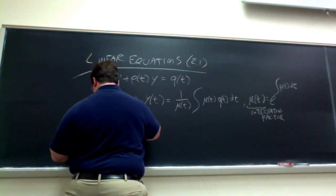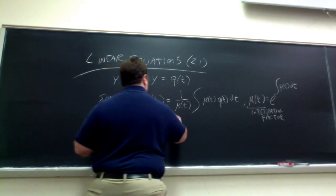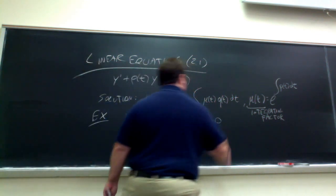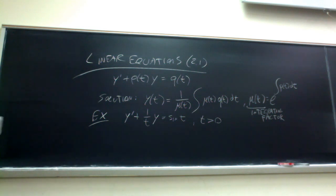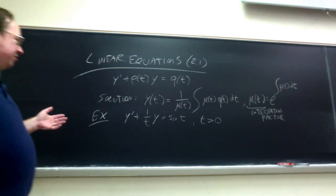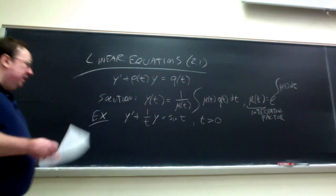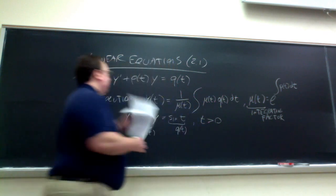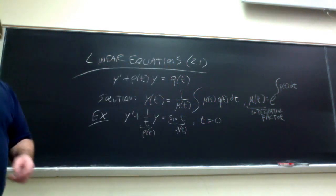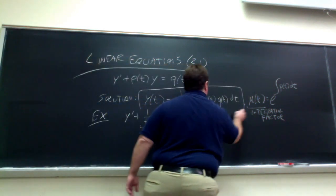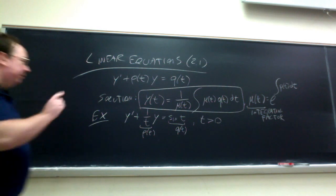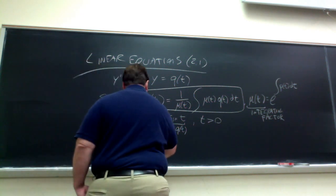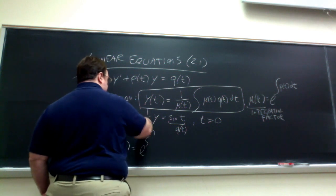I have Y prime plus Y over T equals sine T. I'm not going to impose an initial condition here — we'll do that later. We need to assume that T is not zero; we're going to go with T positive. So if I were to impose an initial condition, it would need to be for some positive T. Here, 1 over T is our P of T, and sine T is our Q of T — so it fits this form. Therefore, I can use this explicit solution formula. The first thing I need, of course, is my integrating factor.